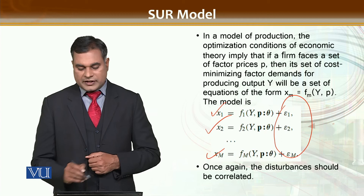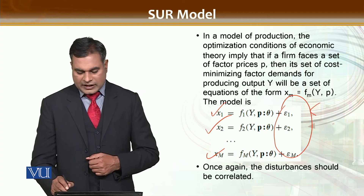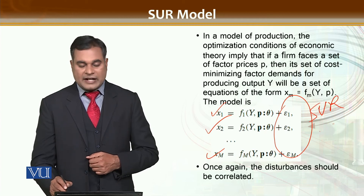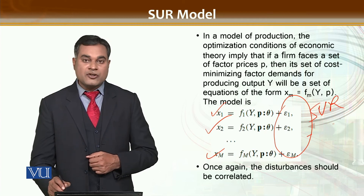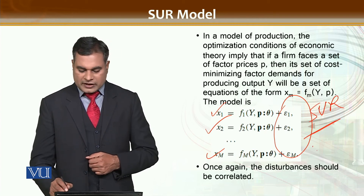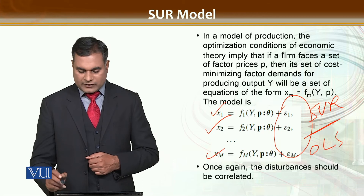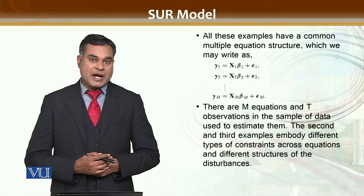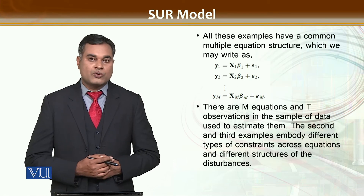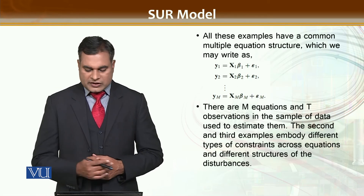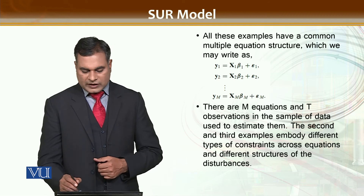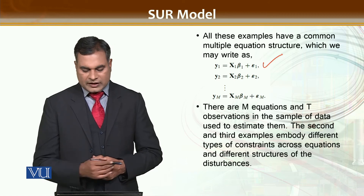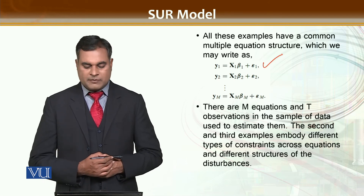If the error terms are correlated, then the best approach is SOR. And if they are uncorrelated, then OLS is the best approach. In generalized form, y1 is equal to x1 times beta1, y2, y3 until ym.